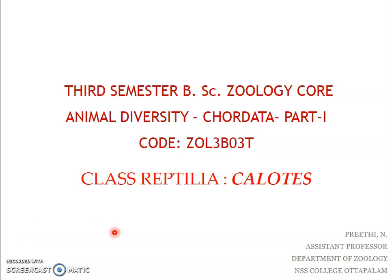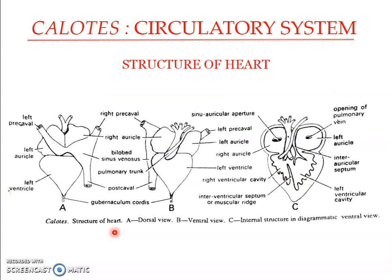Welcome to another session on class Reptilia, the type species Calotes. In this presentation we will be looking in detail into the Calotes circulatory system. The circulatory system includes the heart and the blood vessels — the arteries, veins, and capillaries. We will see here the structure of the heart of Calotes.